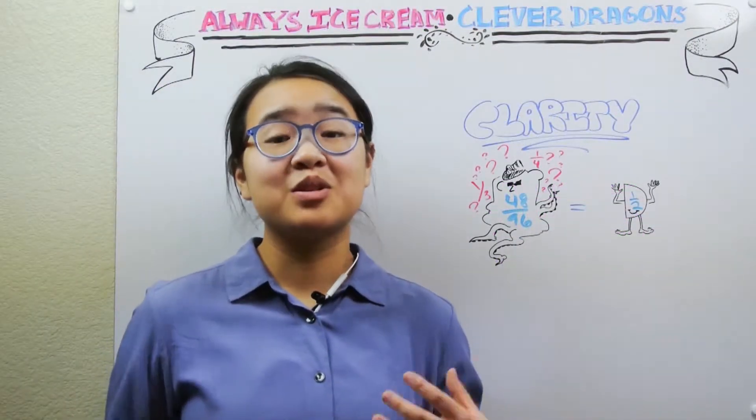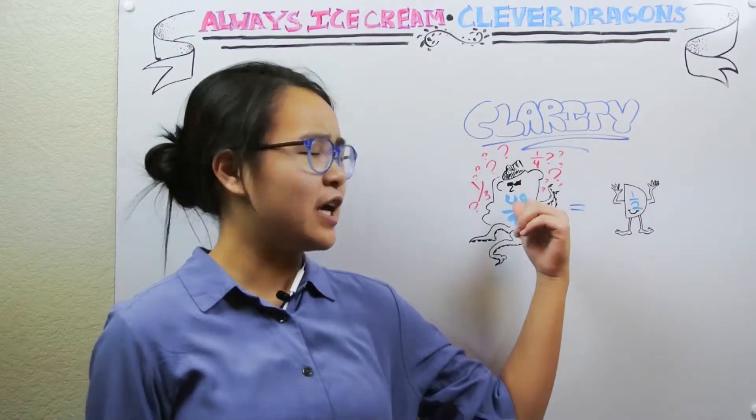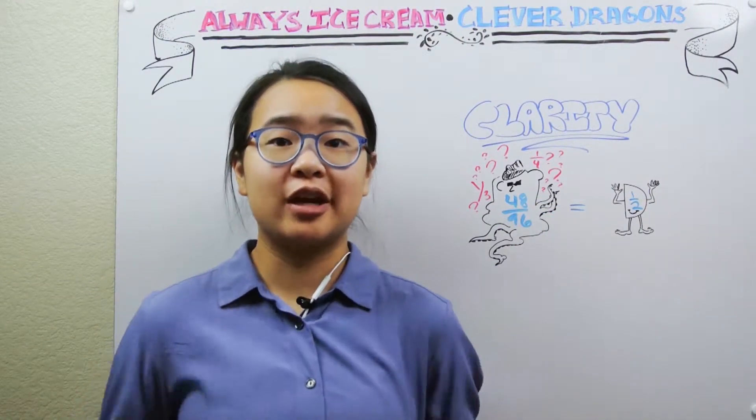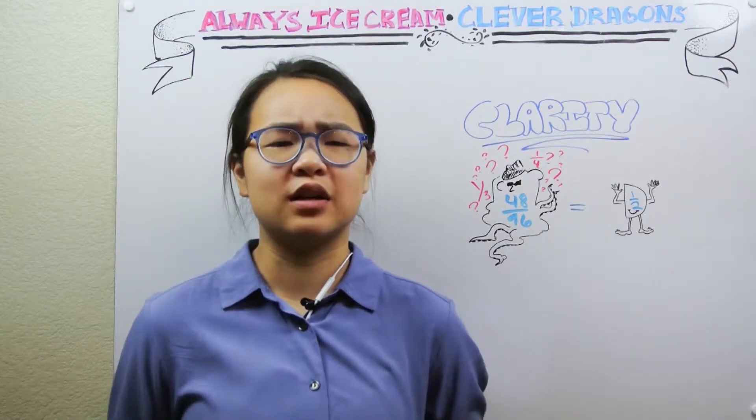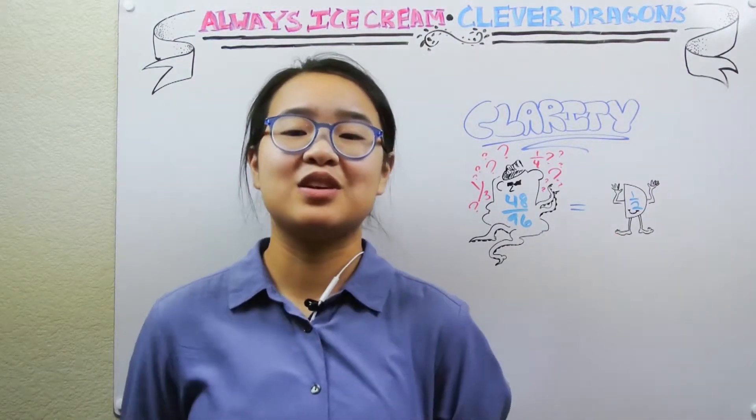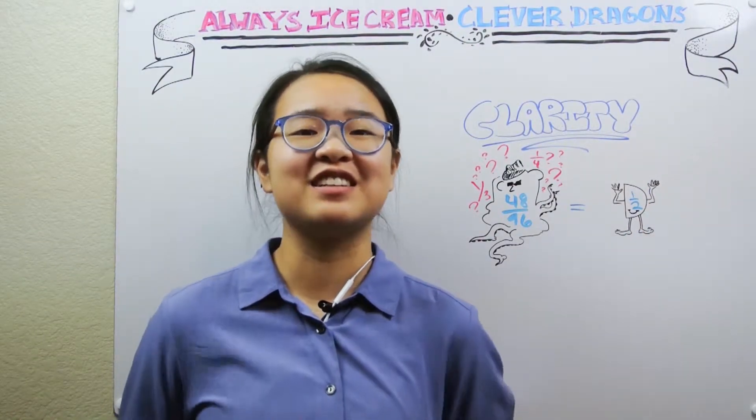So the reason we reduce fractions is for the sake of clarity. Say that you have 48/96 as an answer for a problem you've just solved. Looking at it right now, it's hard to see what it means. Is it equal to a quarter, a third? After reducing it, however, you can tell that the fraction is equal to one half, which you can understand easily at a glance.